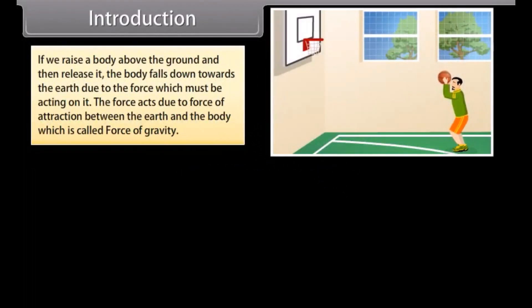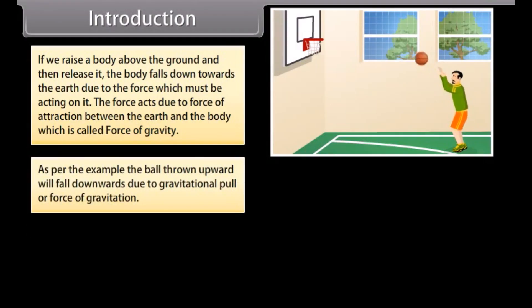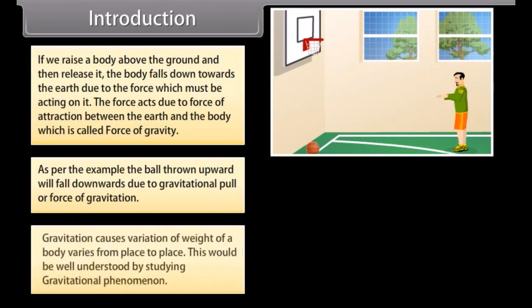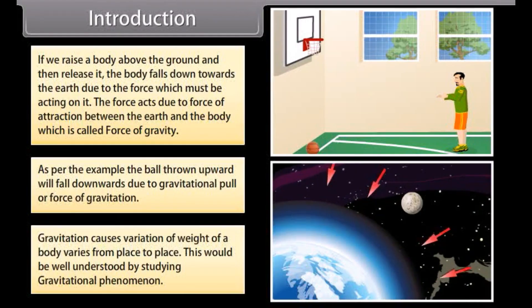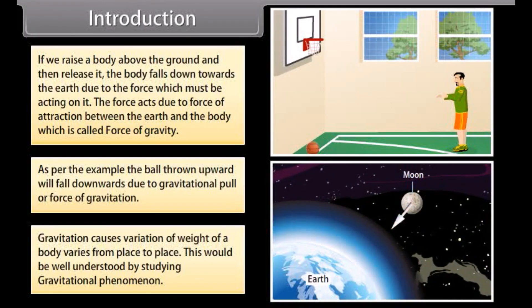Introduction. If we raise a body above the ground and then release it, the body falls down towards the earth due to the force acting on it. This force acts due to the force of attraction between the earth and the body, which is called force of gravity. A ball thrown upward will fall downwards due to gravitational pull. Gravitation causes variation of weight — the weight of a body varies from place to place.